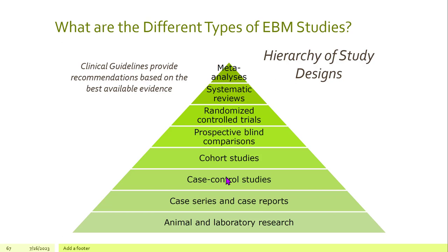Let's look at the different types of evidence-based medicine studies we'll come across throughout the term. They exist in a hierarchical model — a pyramid — where the base provides only foundational studies that are less informative than those at the top. The top of the pyramid provides the best evidence for effective treatment modalities.